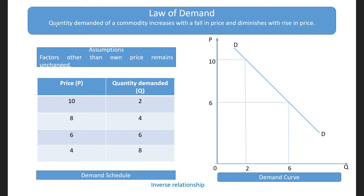Given these assumptions, human behavior acts such that when price of a good falls, the demand for that good increases, and when price of a good increases, its demand falls. When we plot this behavior in a table, it is called a demand schedule, and this demand schedule shows the combinations of price and quantity demanded.